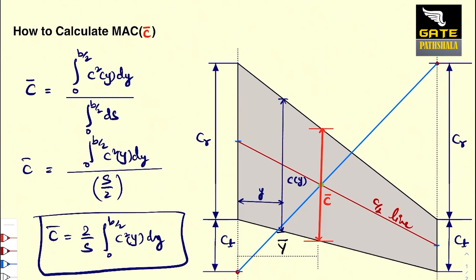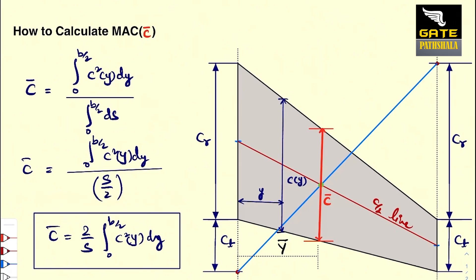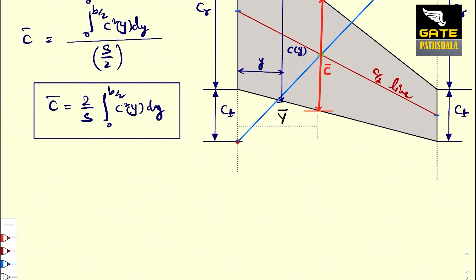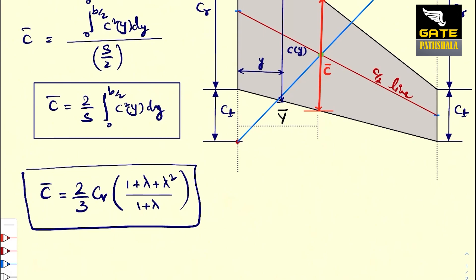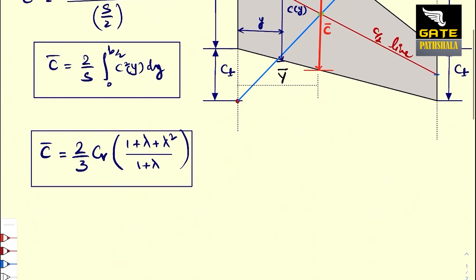Using this formula, one can compute the mean aerodynamic chord of the wing. For a constant taper and constant sweep angle, considering a general trapezoidal planform, the mean aerodynamic chord can also be determined by the formula: C bar equals (2/3) CR times (1 + λ + λ²) divided by (1 + λ), where CR is the root chord length and λ is the taper ratio, which is equal to tip chord divided by root chord.